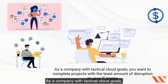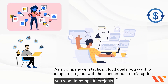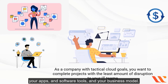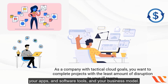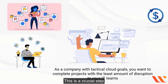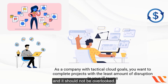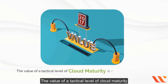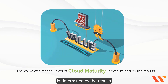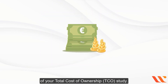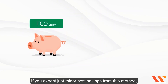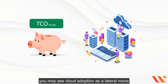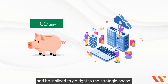As a company with tactical cloud goals, you want to complete projects with the least amount of disruption to your IT teams, your apps and software tools, and your business model. This is a crucial step in maximizing the cloud's potential. The value of a tactical level of cloud maturity is determined by the results of your Total Cost of Ownership (TCO) analysis. If you expect only minor cost savings, you may see cloud adoption as a lateral move and be inclined to skip to the strategic phase.